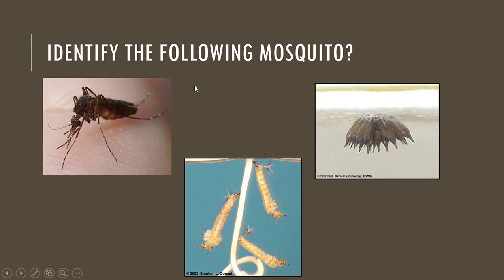Next question: this mosquito has a large body with long legs in a squatting position. Characteristics of eggs are star-shaped and in clusters. Larvae are getting attached to the roots — so this is Mansonia mosquito.